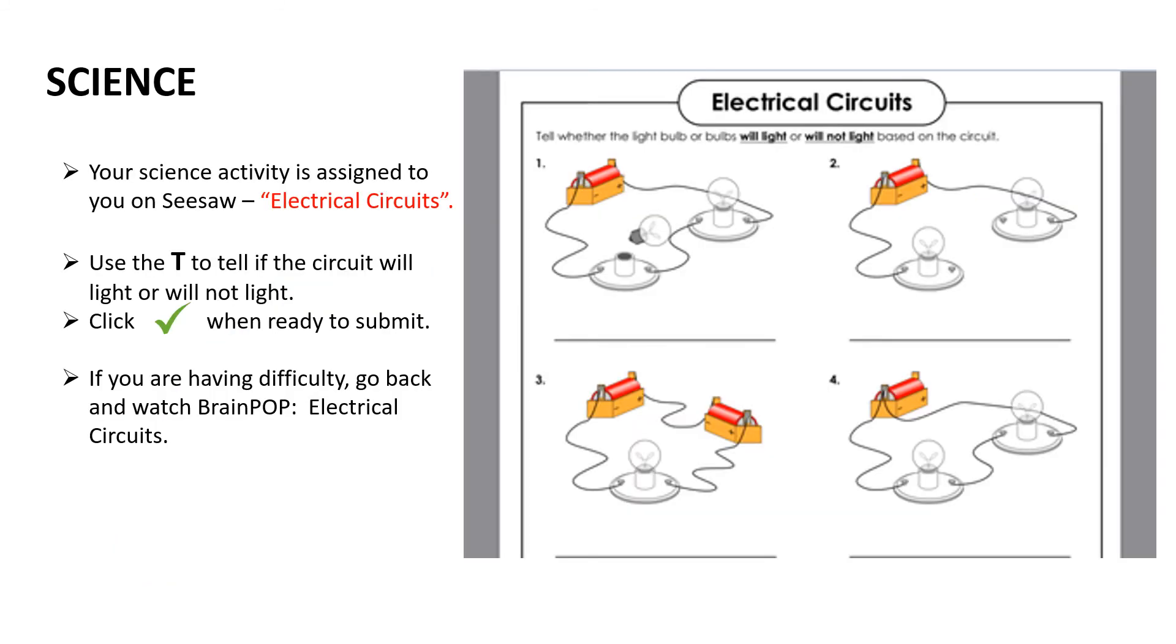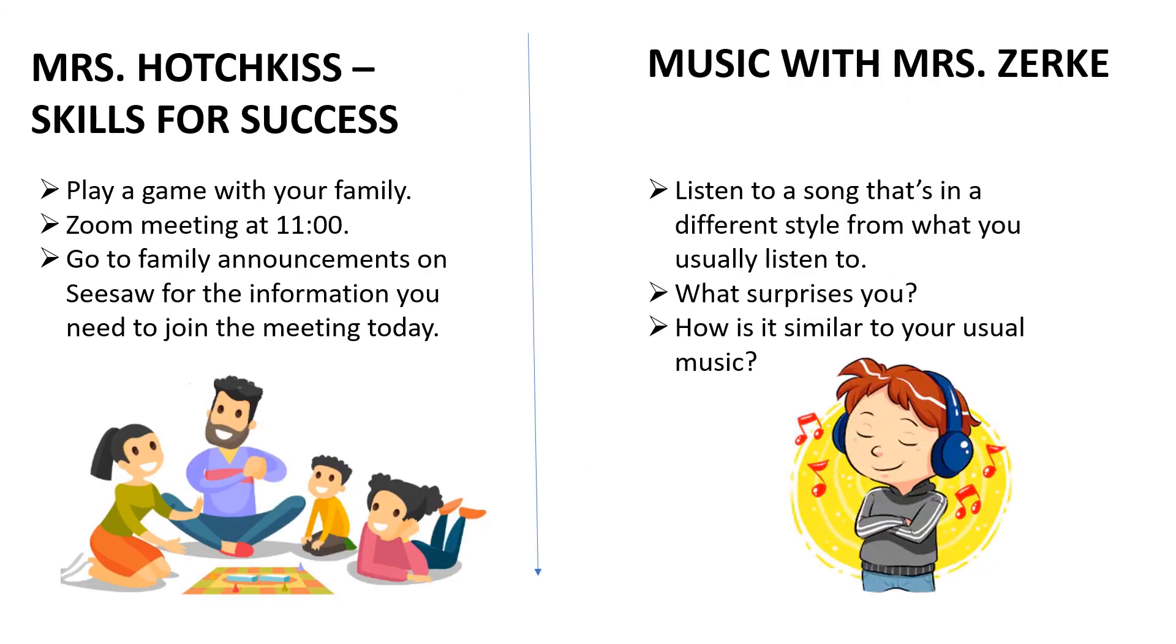In science today, your science activity is assigned to you on Seesaw. It's called electrical circuits. And you will use the T to write right in if the circuit will light or not. And so you could put in text on each of these and then click the green circle with the check mark in it to submit it to me. And if you're having difficulty remembering what makes an electrical circuit, you can always go back to BrainPop from on Monday and rewatch electrical circuits.